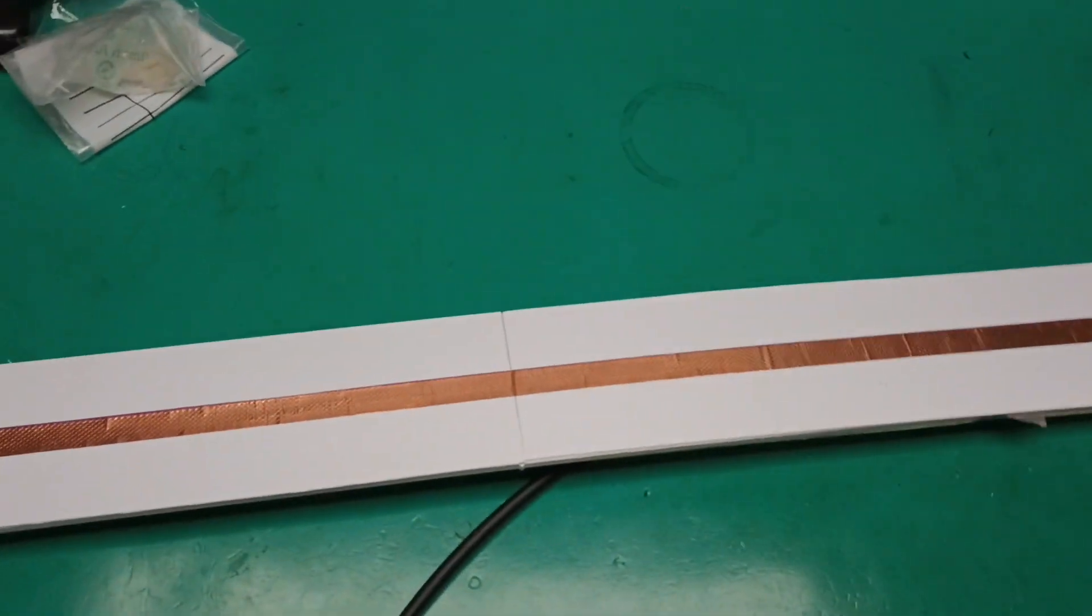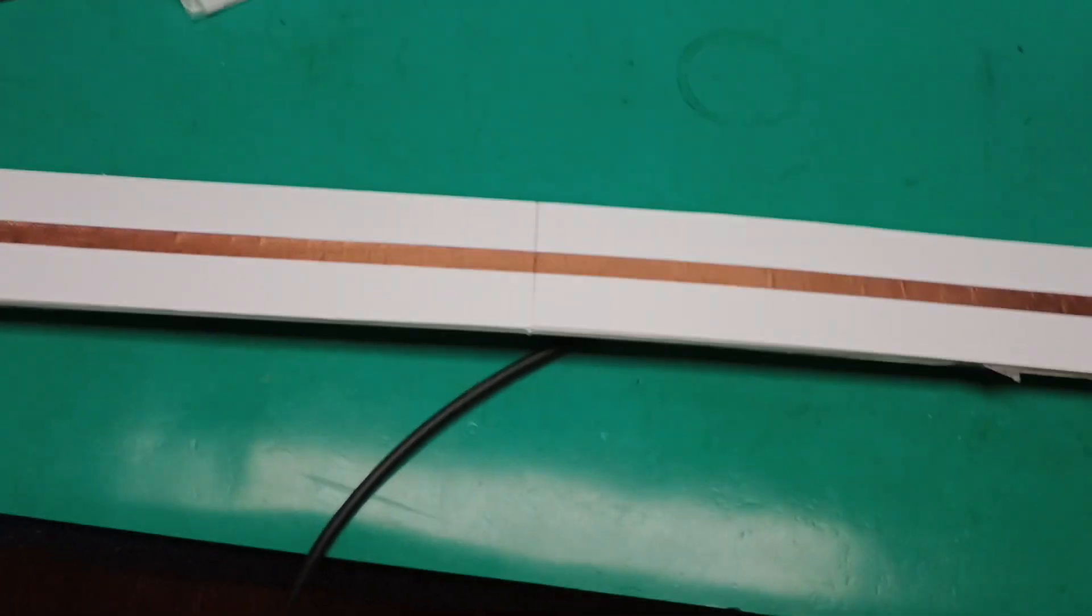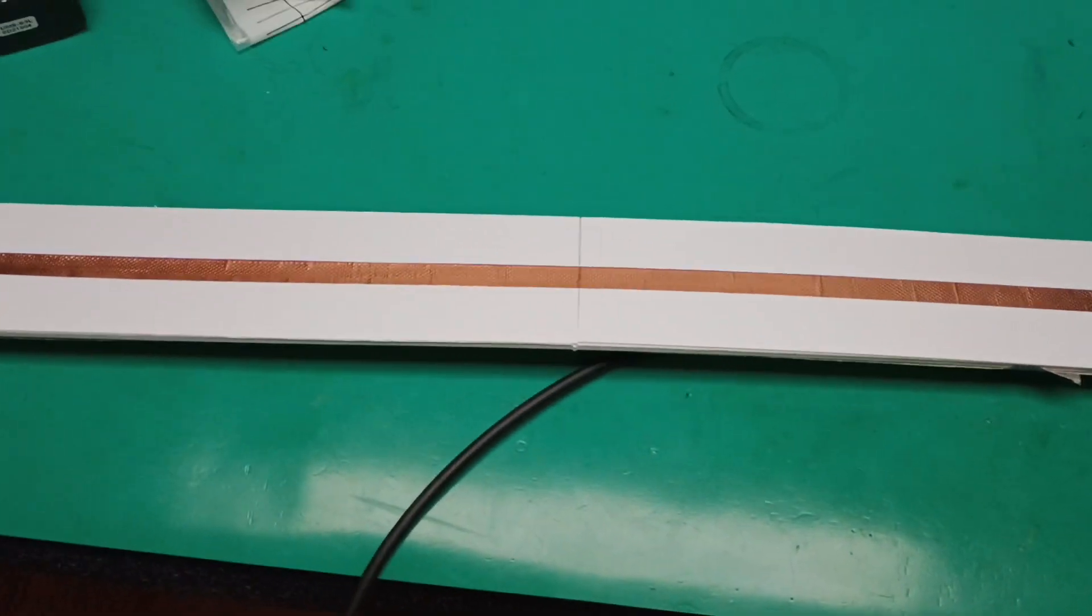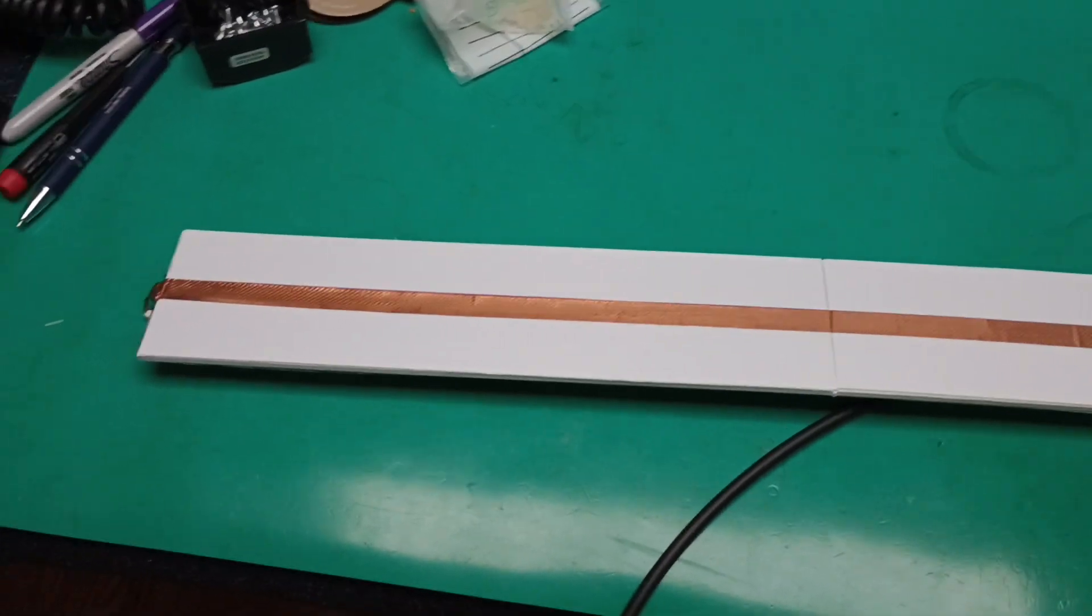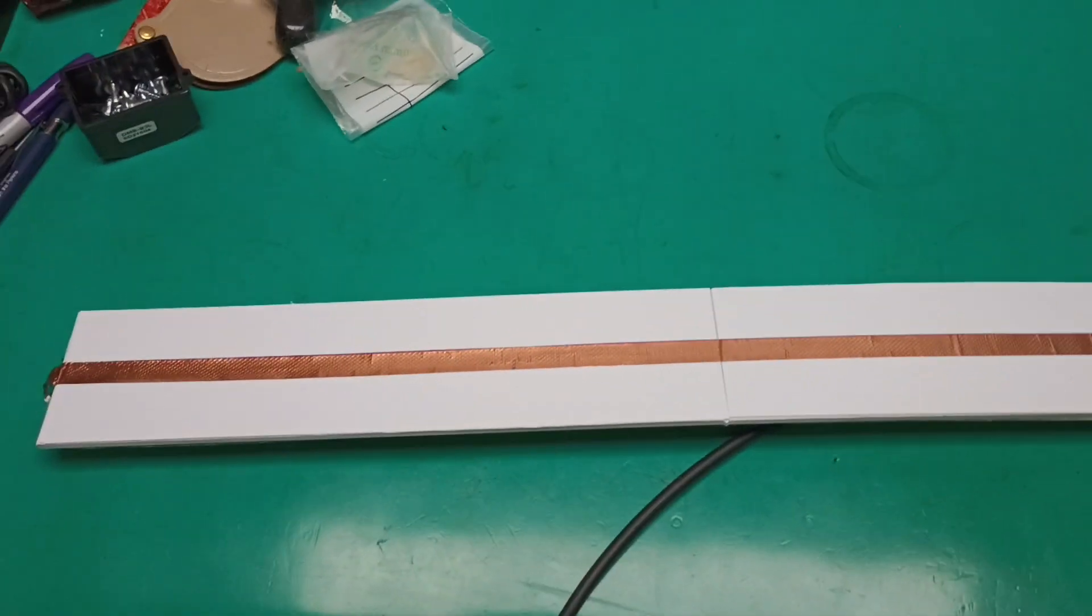It's impossible to make an open line that's 50 ohms. Well, that's not true. There's an exception. It's impossible to make twin lead at 50 ohms. The dimensions are all wrong.